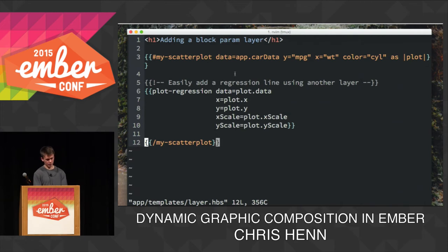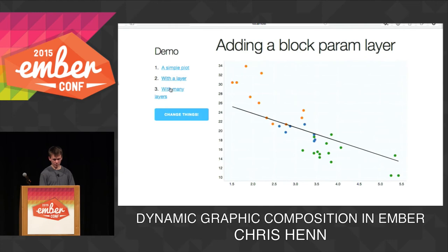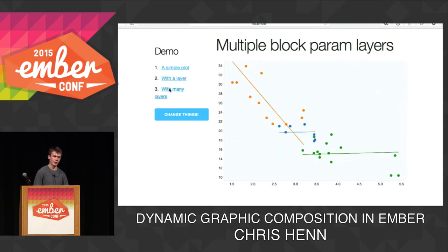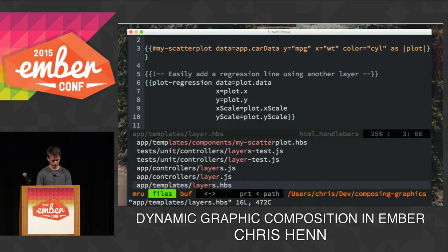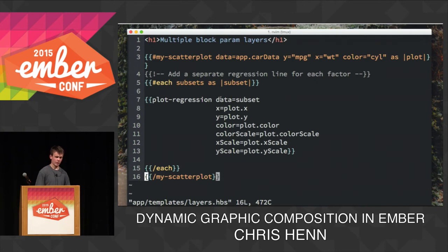As a third step, I wanted to show how easy it is to add multiple regression lines to this plot — one as a factor of the number of cylinders. So I'm operating on subsets of data rather than the original dataset. They're colored, one for each set of scatter points. This was easily implemented: instead of one regression component inside the scatter plot block content, I'm iterating over subsets and adding a regression for each, with different data but still using the same scale attributes of the plot.